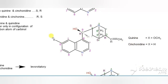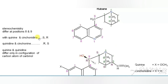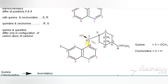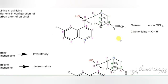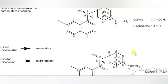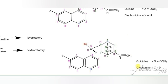Quinine, quinidine, cinchonine, and cinchonidine are the four alkaloids from cinchona. The first two, quinine and quinidine, are isomers of each other, and cinchonine and cinchonidine are isomers of each other.